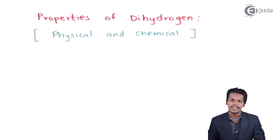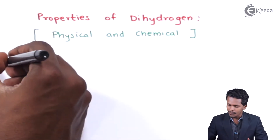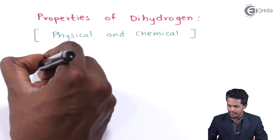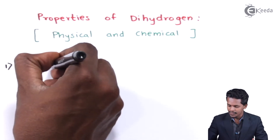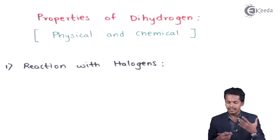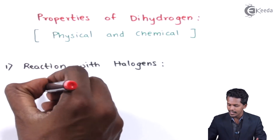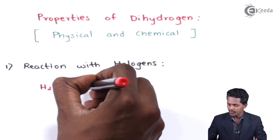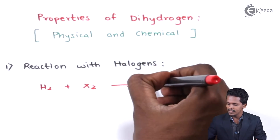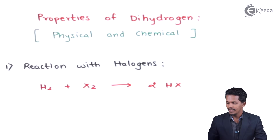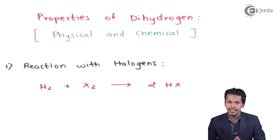Let me discuss the chemical properties of hydrogen. Talking about the reaction of hydrogen with halogens — hydrogen is very much reactive with halogens. If we consider H₂ and X₂, the product we get is 2 moles of HX, which is hydrogen halide.